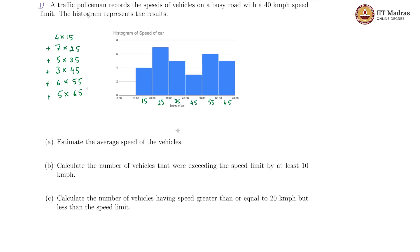Taking 5 common out of this stuff, we can write this as 5 times 4 into 5 times 4 into 3 plus 7 into 5 plus 5 into 7 plus 3 into 9 plus, I think I should put them in brackets here plus 6 into 11 plus 5 into 13.